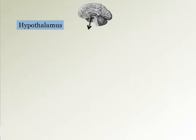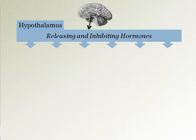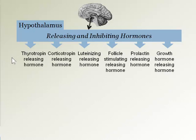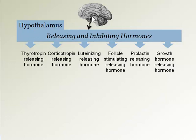The hypothalamus sends out either releasing or inhibiting hormones. The releasing hormones include thyrotropin releasing hormone, corticotropin releasing hormone, luteinizing releasing hormone, follicle stimulating releasing hormone, prolactin releasing hormone, and growth hormone releasing hormone — notice they all closely match the hormone name with the word releasing added. When a hormone name includes either releasing or inhibiting, we know it has come from the hypothalamus. These hormones go through the hypophysial portal system to target the anterior pituitary.